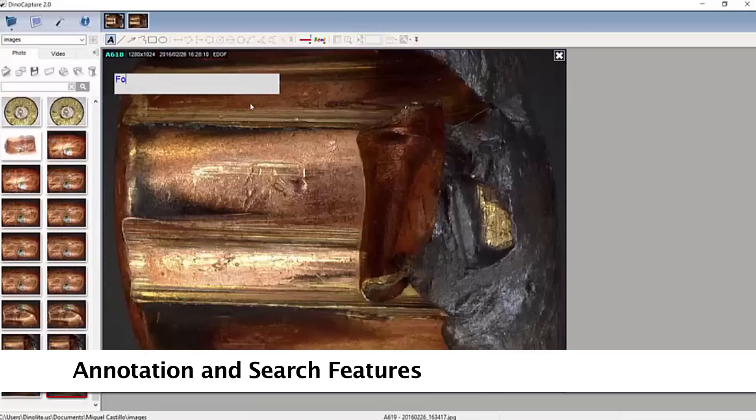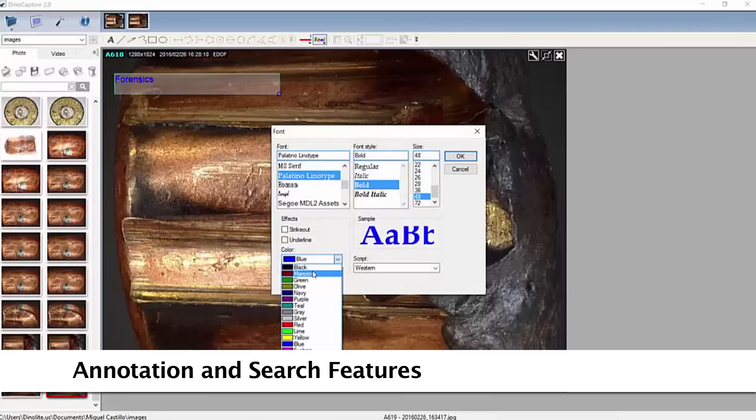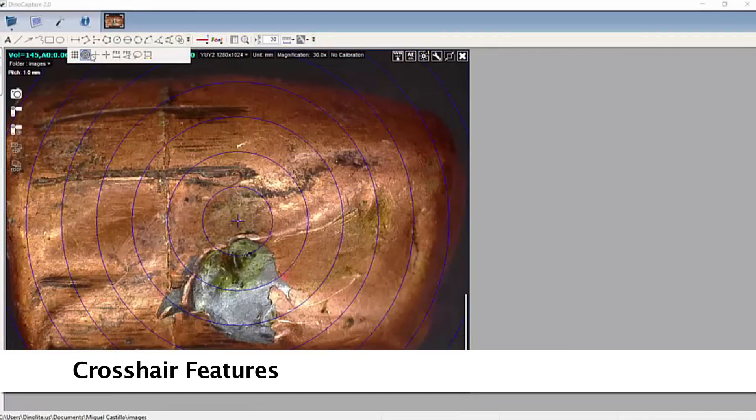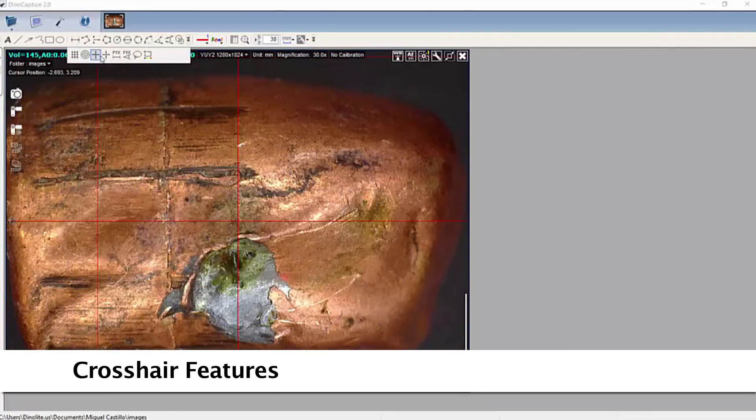Drawing and text tools help to label onto images, and annotations provide cataloging abilities as annotations are searchable within the software. Crosshairs, grid lines, and other overlay and transparency options are also available.